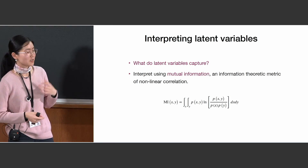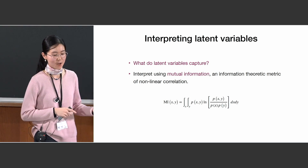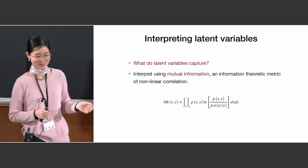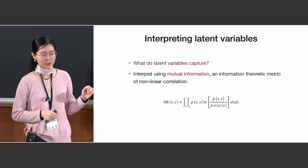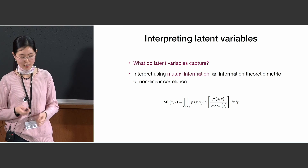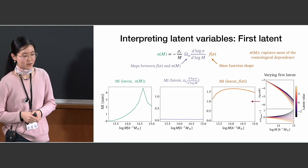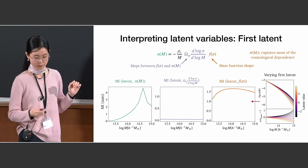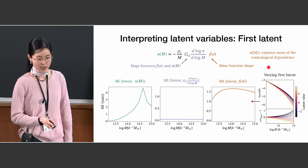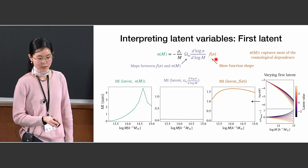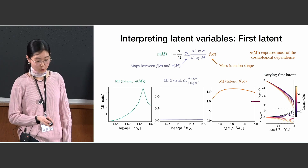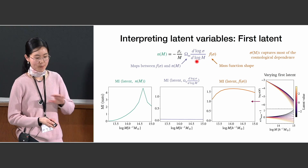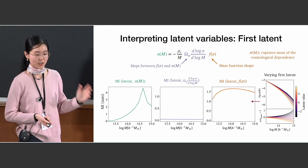To better understand this, we need to interpret what information our latent variables capture about the mass function. To do that, we use mutual information — a metric for nonlinear correlation between variables that is well-established in information theory. Using mutual information, we examine what information the first latent variable is learning about the ground truth halo mass function. Recall that we can write the halo mass function where f(sigma) on the right captures all the important information about the shape of the halo mass function, and a separate term maps this from a function of sigma to a function of halo mass.